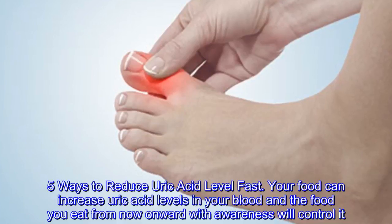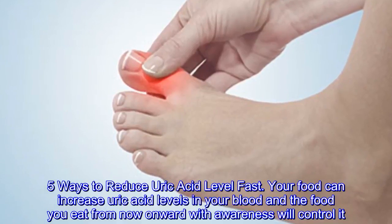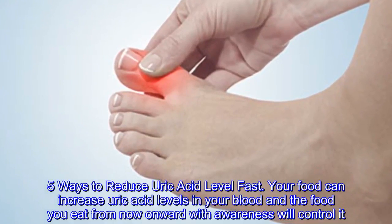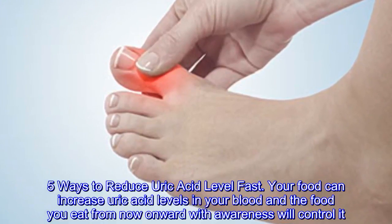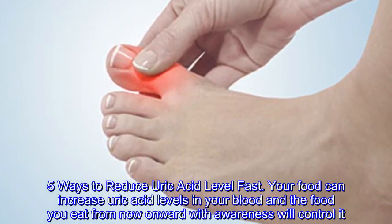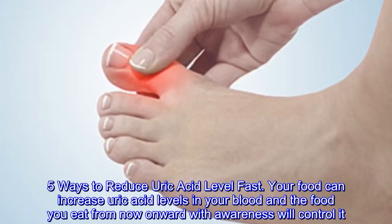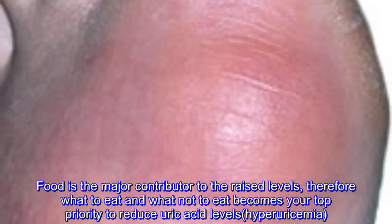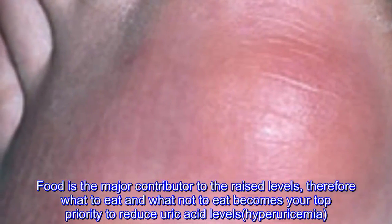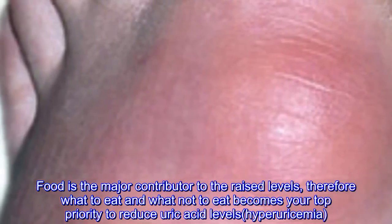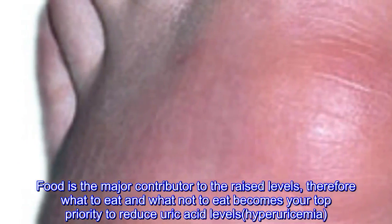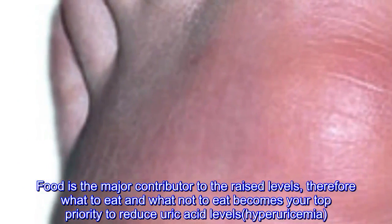Five ways to reduce uric acid levels fast. Your food can increase uric acid levels in your blood, and the food you eat from now on, with awareness, will control it. Food is the major contributor to raised levels, therefore what to eat and what not to eat becomes your top priority to reduce uric acid levels — hyperuricemia.